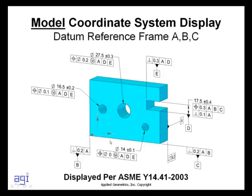So if we wanted to show on our model the ABC datum reference frame, datum feature A is the back surface there, datum feature B is this left side, datum feature C is this bottom surface here. And our coordinate system is down there.